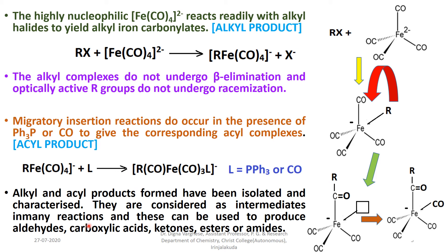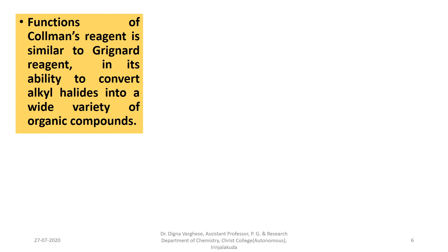These alkyl and acyl products are considered intermediates in many reactions and can be used to produce aldehydes, carboxylic acids, ketones, esters, or amides. The functions of Collman's reagent are similar to those of a Grignard reagent in its ability to convert alkyl halides into a wide variety of organic compounds.